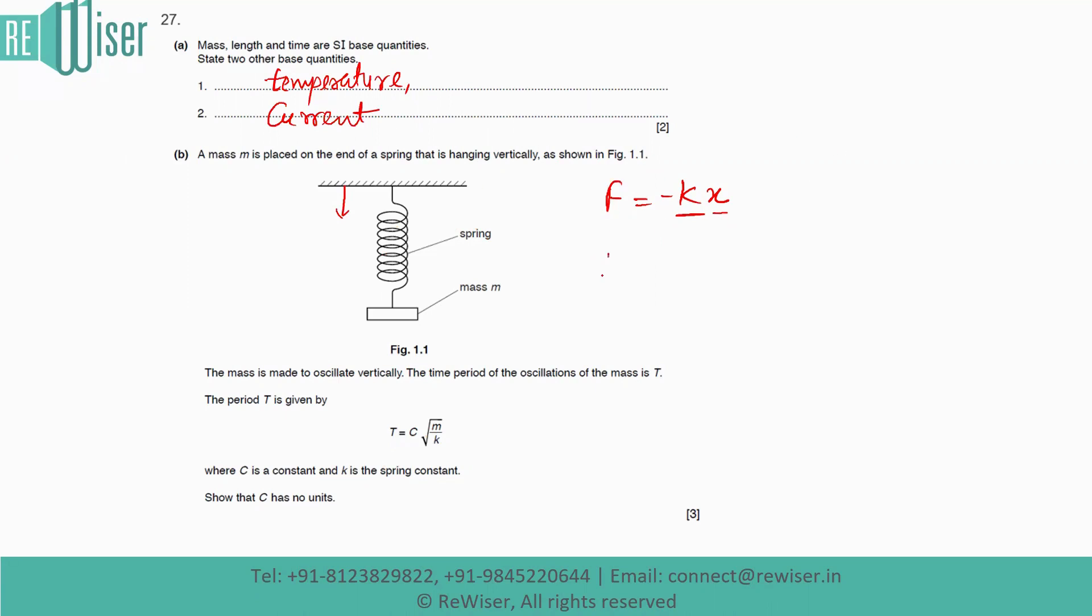So for the K units will be force upon x. That means force upon length. And the units of the force are basically defined from Newton's second law: m × a, kg·m·s⁻². So for K, units will be kg·m·s⁻² upon m. So meter meter will cancel out, will be kg·s⁻².